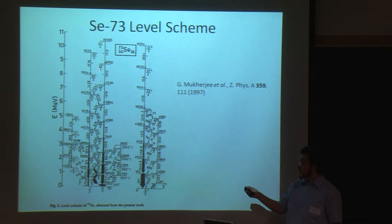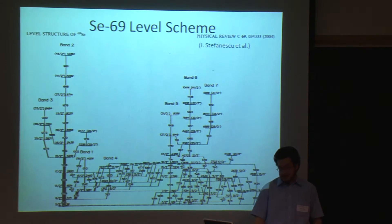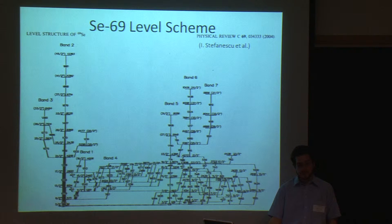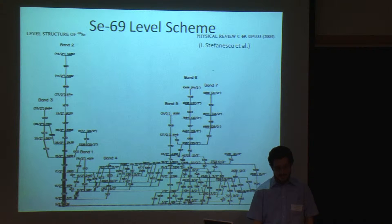These orderly ladder-like structures, where the states have fairly predictable energies, are associated with collective behavior. Here's the level structure for selenium-69, which has one fewer pair of neutrons than my nucleus, and it's quite a bit messier. The collective bands here are much weaker, and there are a lot of these irregular low energy states, and those are associated with single particle behavior.